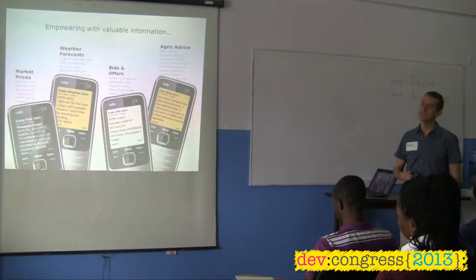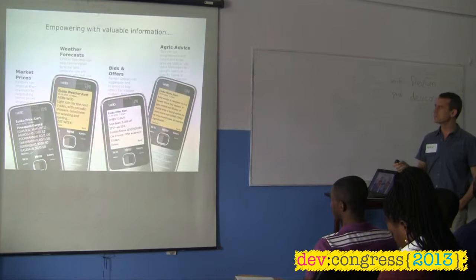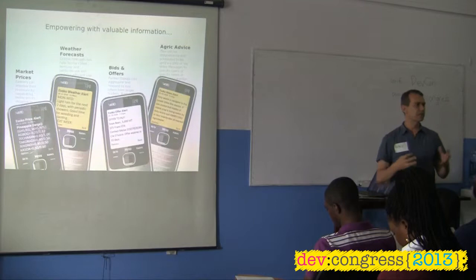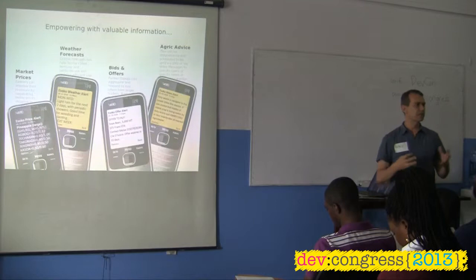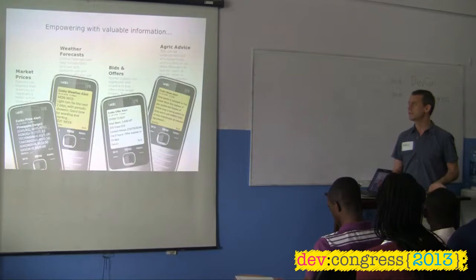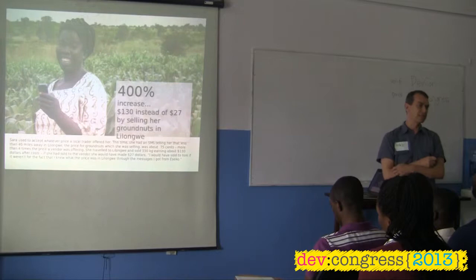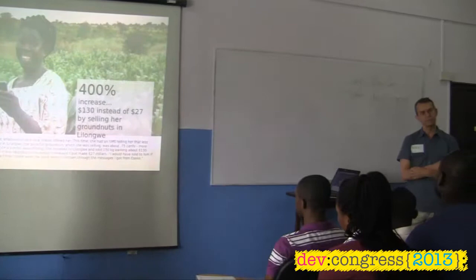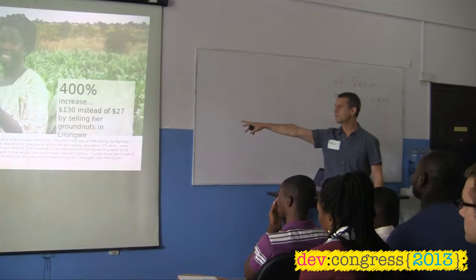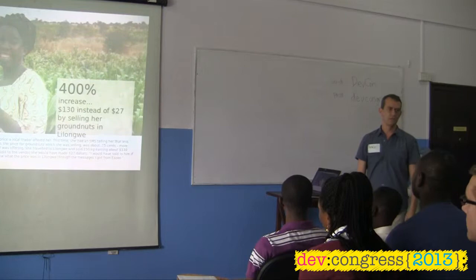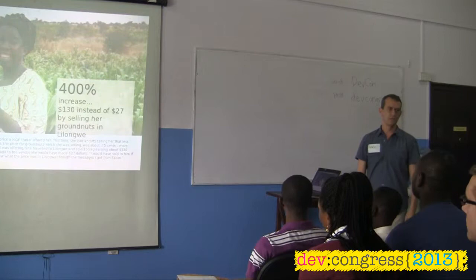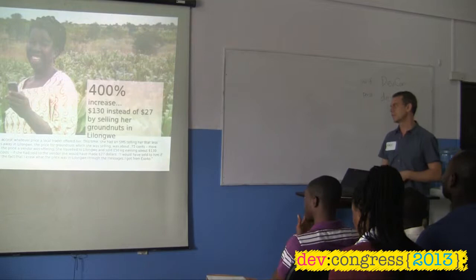We have about four key alert services: market prices, weather forecasts, bids and offers, and agricultural advice. Anyone who signs up can receive this, personalized to where they are, what they want, and where they trade — and we deliver those messages automatically, on a daily or weekly basis. This is a woman called Sarah Mawunda in Malawi. She got prices on ESOCO and couldn't quite believe that was really the price she could get. So she and a few neighbors rented a pickup truck, took her goods to Lilongwe, and instead of getting the $27 offered by the local trader, she sold it for $130. There are really significant benefits when you can provide information and give people a choice — they'll go to a different market and make a different sale.